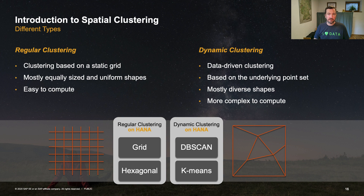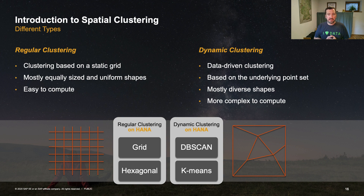Technically, geospatial clustering algorithms can be divided into two groups: regular clustering and dynamic clustering. Regular clustering describes a static grid — like grid clustering, rectangular grid clustering, or hexagonal clustering — where shapes are mostly equal in size, uniform, and relatively easy to compute. Dynamic clustering is a more data-driven approach to finding clusters based on the underlying point data set, resulting in mostly diverse shapes that are more complex to compute. On SAP HANA SQL script level, we offer grid and hexagonal clustering on the regular side, and DBSCAN and k-means for dynamic data-driven clustering.